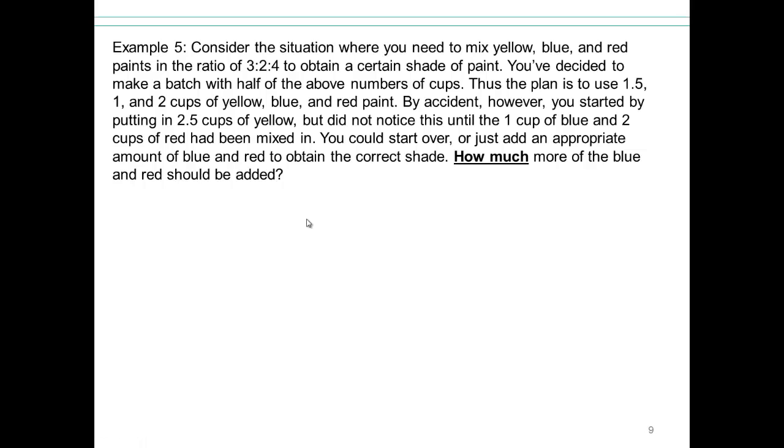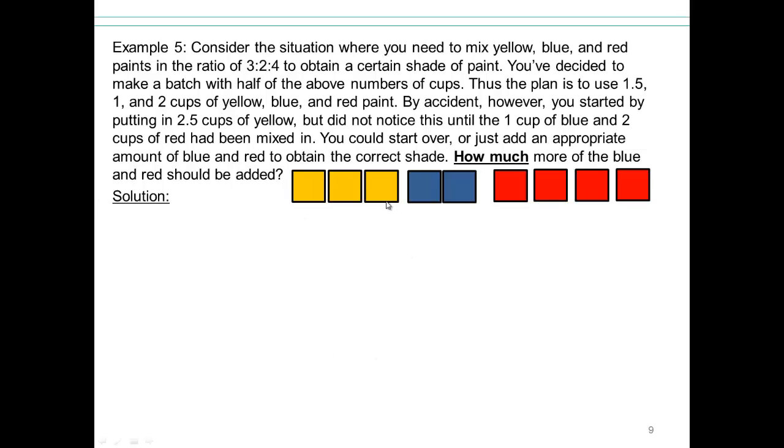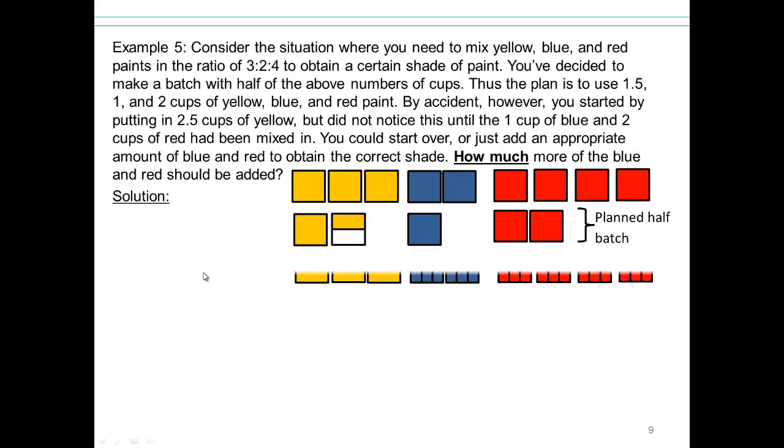I'm going to show you a visual solution. So let's take a look. Here's our original paint combination. We have three to two to four. Three yellow cups, two blue cups, and four red cups. That's what's giving us the shade of the paint that we need. If you wanted to use half of that, then you would have to take one and a half cups of yellow, one cup of blue, and two cups of red. That's what you planned. You planned on doing half the batch. Instead, what did you have? You did two and a half cups of yellow.